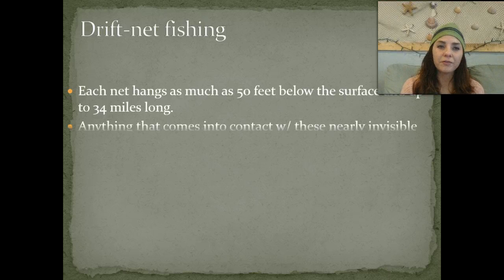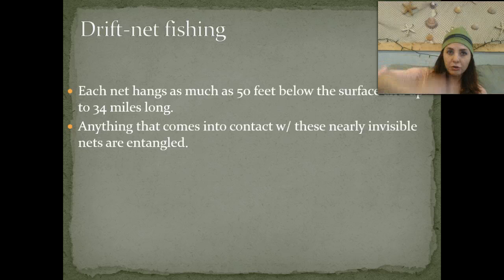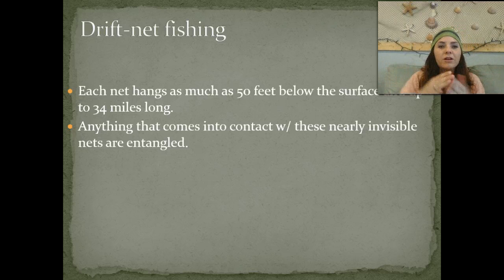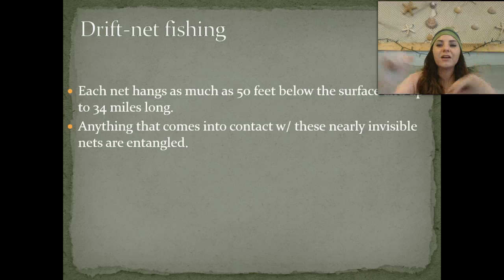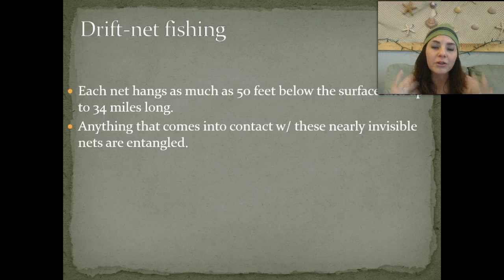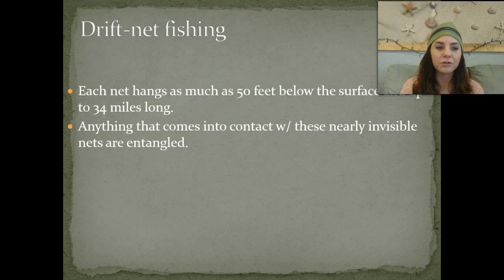Drift nets hang as much as 50 feet below the surface and can be up to 34 miles long—very deep and very long. Anything that swims into this invisible net is going to get caught and entangled, especially anything with gills. Marine mammal flippers, tails, turtle flippers, tails, and heads can get stuck in these nets, and they can be caught as bycatch and killed.